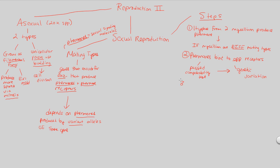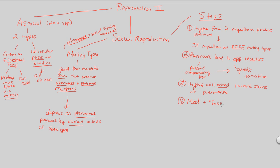Step three: the hyphae will extend toward the source of the pheromones. Step four: after this extension, the hyphae will meet and fuse. However, we have to be careful with the term fuse — the haploid nuclei do not fuse together just yet. This fusion process does not create a diploid cell. It is still haploid plus haploid.